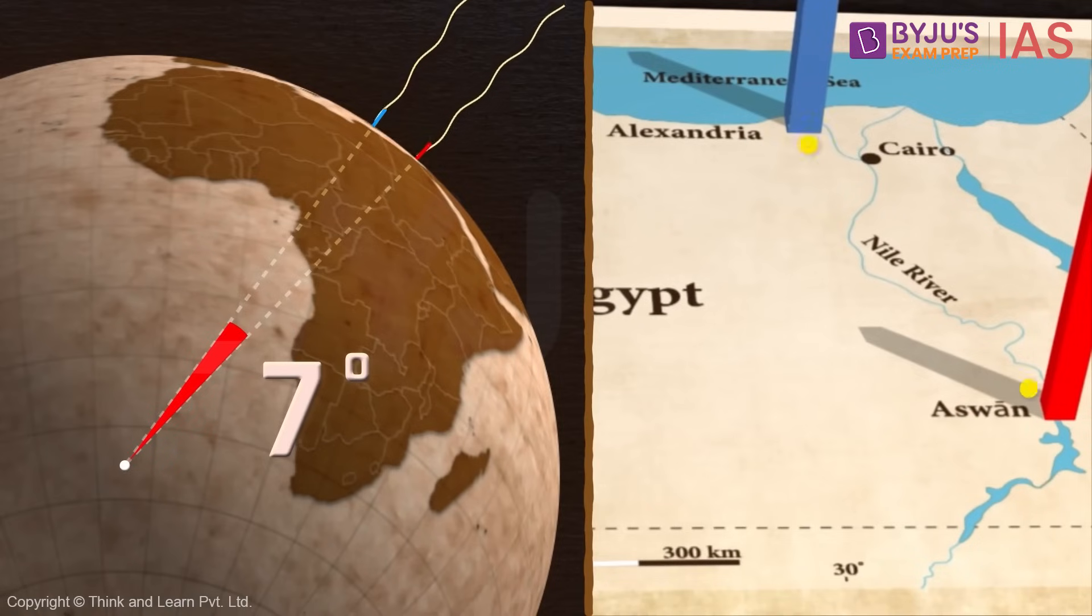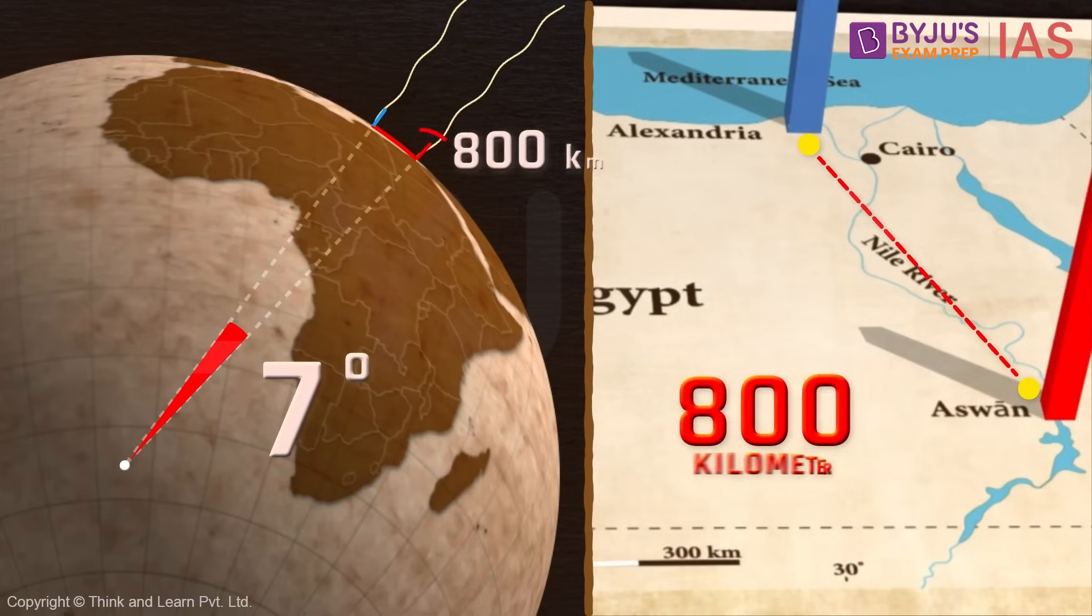Eratosthenes also knew the distance between these two cities was approximately around 800 kilometers. So he used these two pieces of information and calculated the whole size of the Earth.